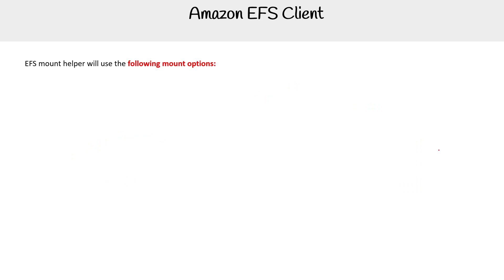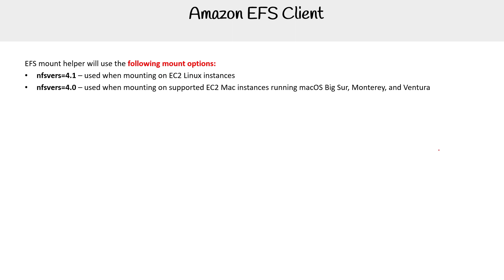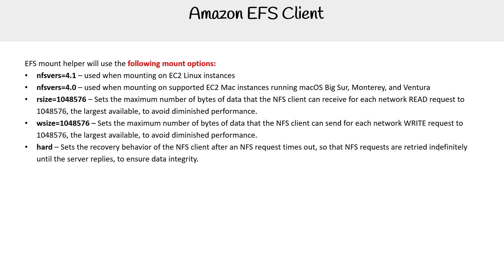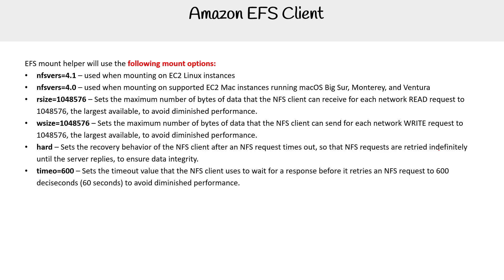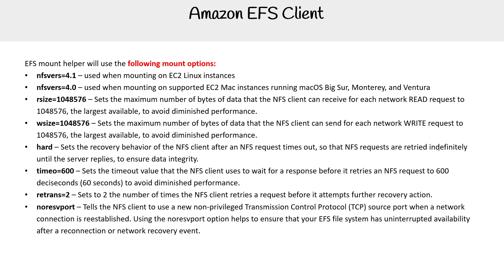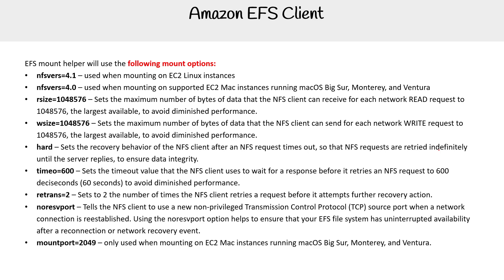EFS mount helper will use the following mount options: NFS version 4.1 when mounting for EC2 Linux, and 4.0 when mounting to supported Mac instances. The rsize is the maximum number of bytes for reads, and wsize for writes. Hard sets the recovery behavior of the EFS client after an NFS request times out, so NFS requests are retried indefinitely. The timeo sets the timeout value the NFS client waits before retrying — set to 60 seconds. Retrans is the number of times it will retry a request before attempting to recover. Noresvport tells the NFS client to use a non-privileged TCP source port when a network connection is re-established. Mountport is set to 2049 for Mac instances.